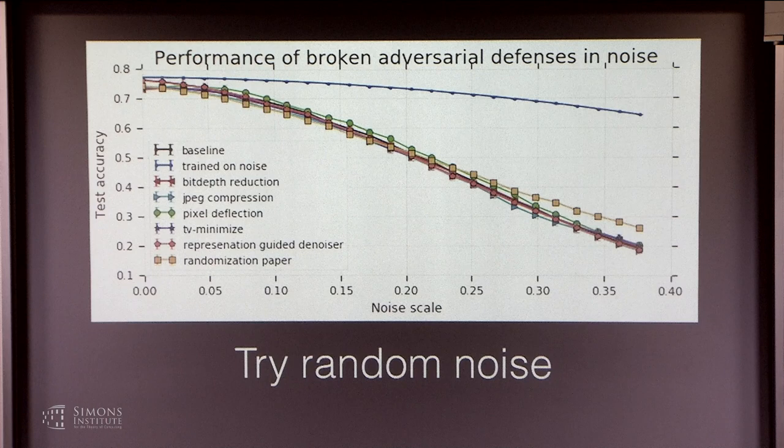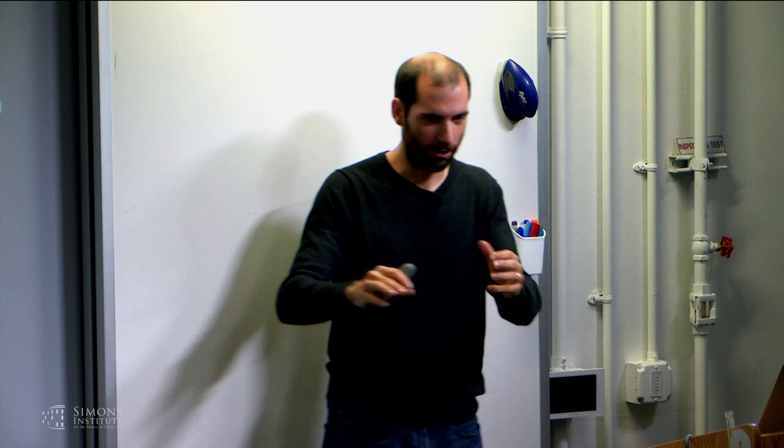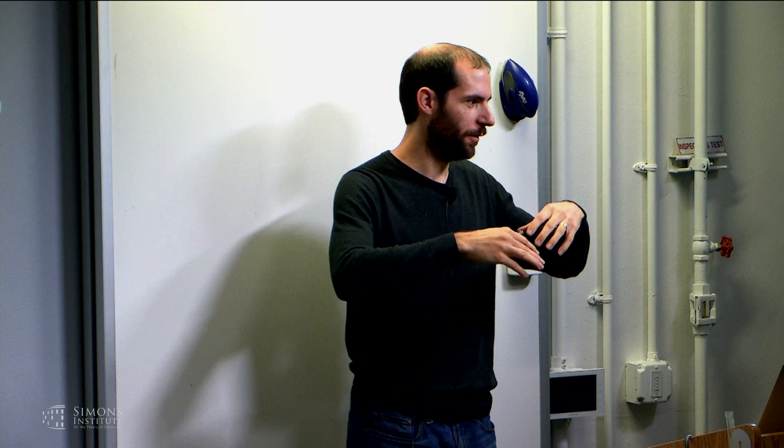In conclusion: to understand adversarial examples, think of it as repeatedly playing a game where you attack and defend. The defender states a fundamental property, the attacker refutes it, and you repeat until you learn what is truly fundamental about adversarial examples. When doing this, we optimize and teach ourselves as much as possible about the space, and eventually we'll learn everything there is to know.